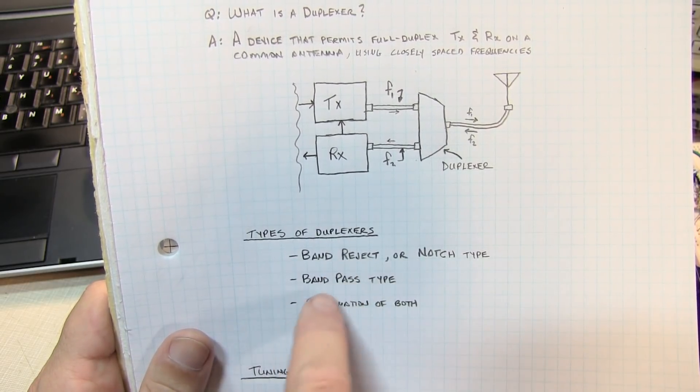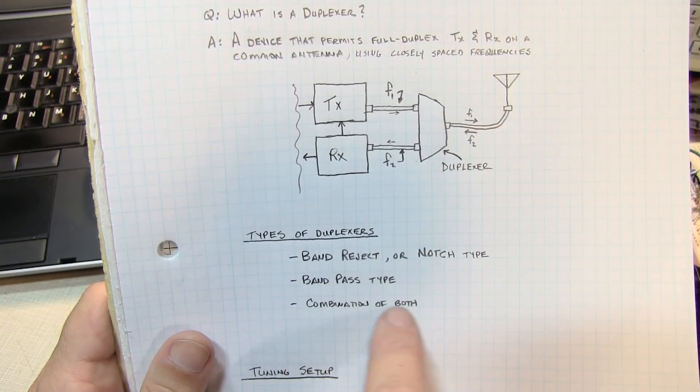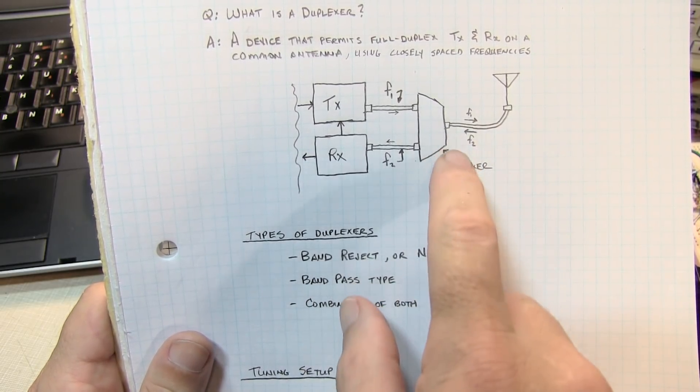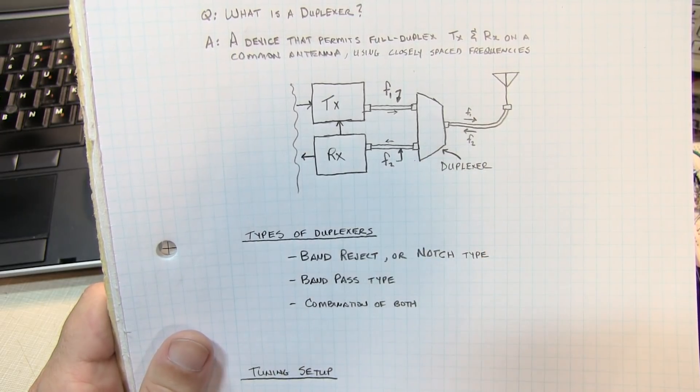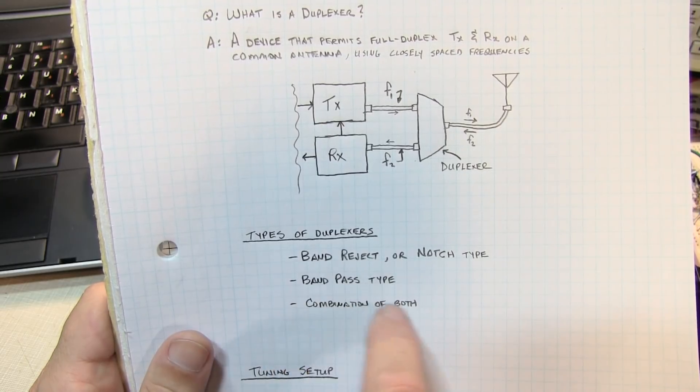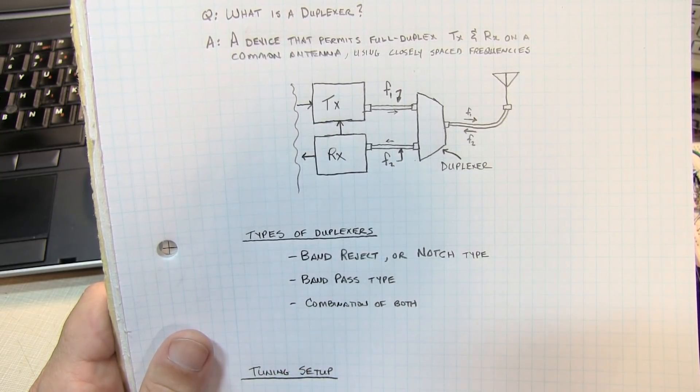And then also there are duplexers that combine both of them. They're both a band pass and band reject in the same device and they're more complex to tune. If I ever get a hold of one here to demonstrate, I'll show tuning one of those combination type devices as well.